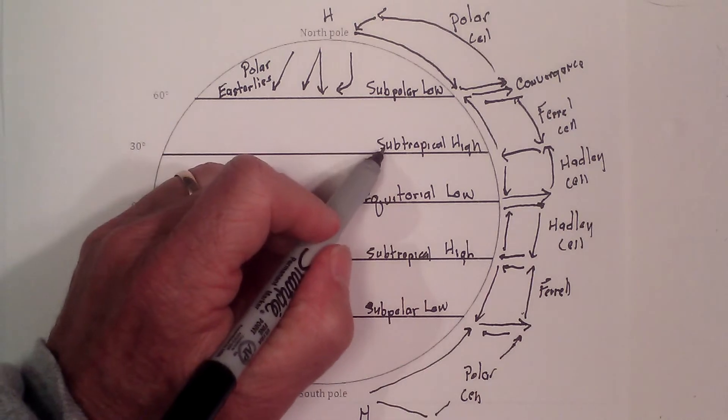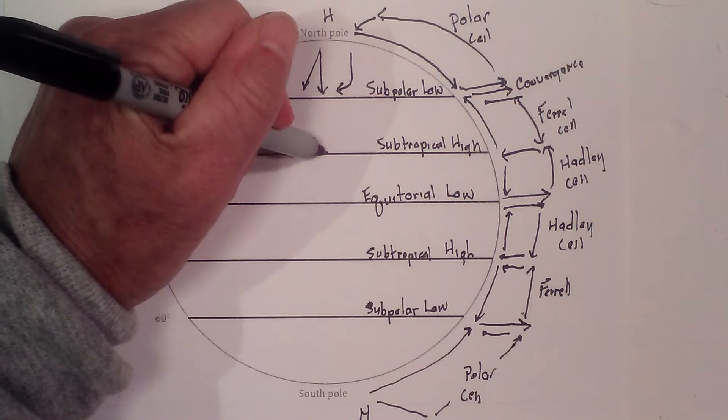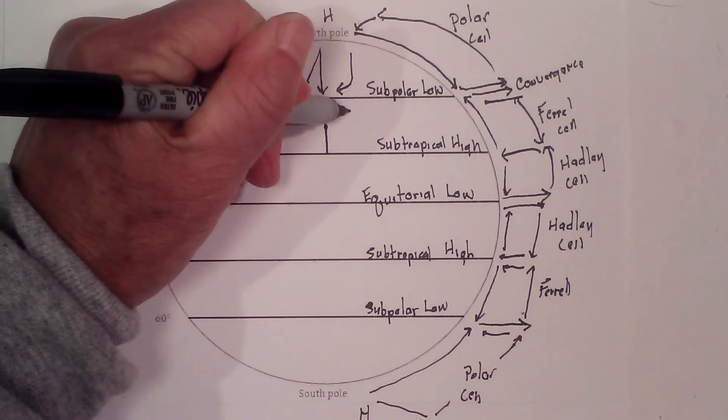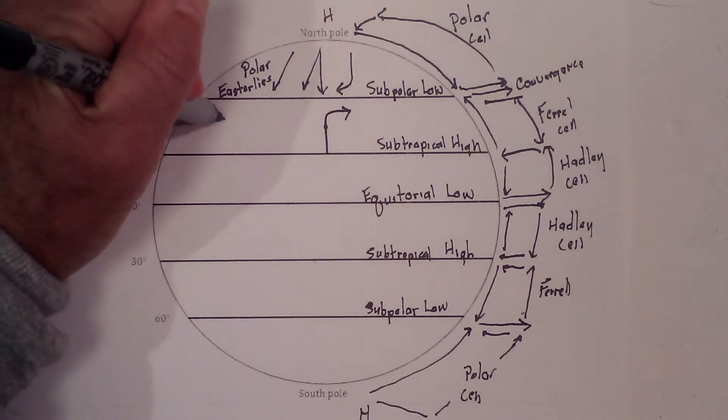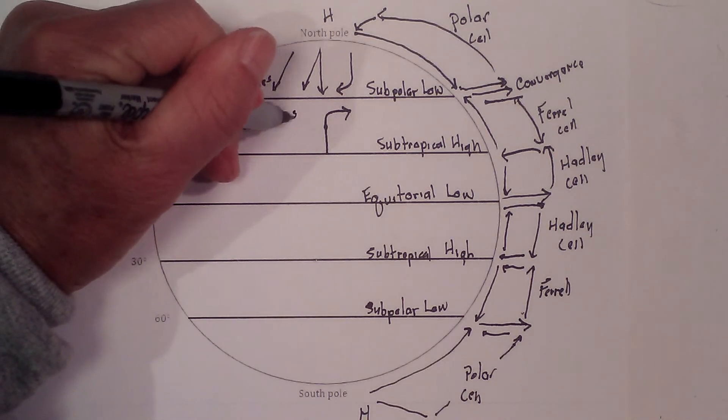Now here we have another high and another low pressure. So the wind is going to go in this direction, and it's going to be deflected to the right. These are the westerlies.